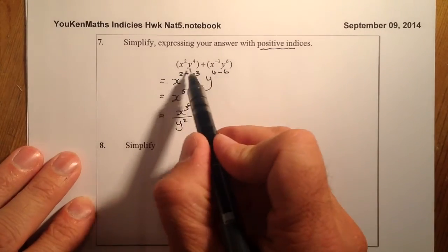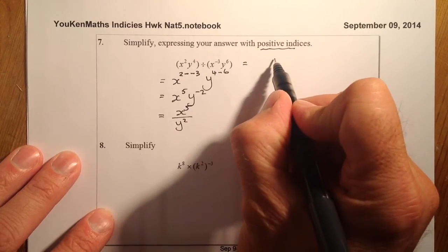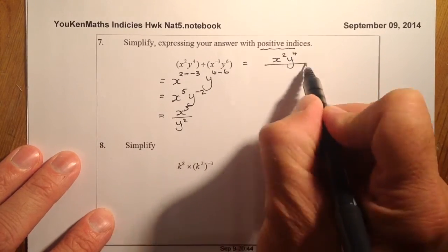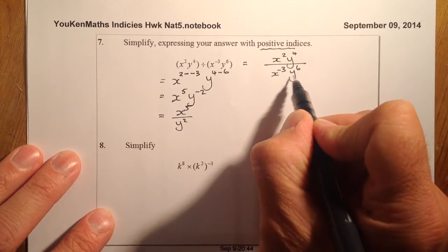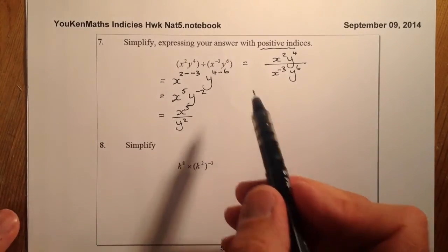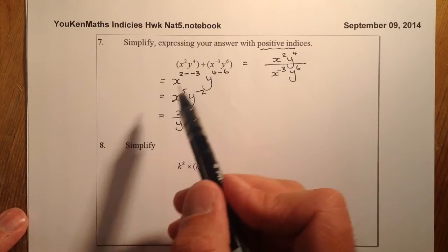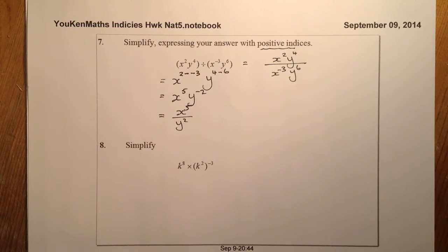You could see this question in a different way. It could be x to the power of 2, y to the power of 4, all divided by x to the minus 3 and y to the 6. Maybe it's easier seeing it this way, because that's more normal for you to see. That's how we would work it through.